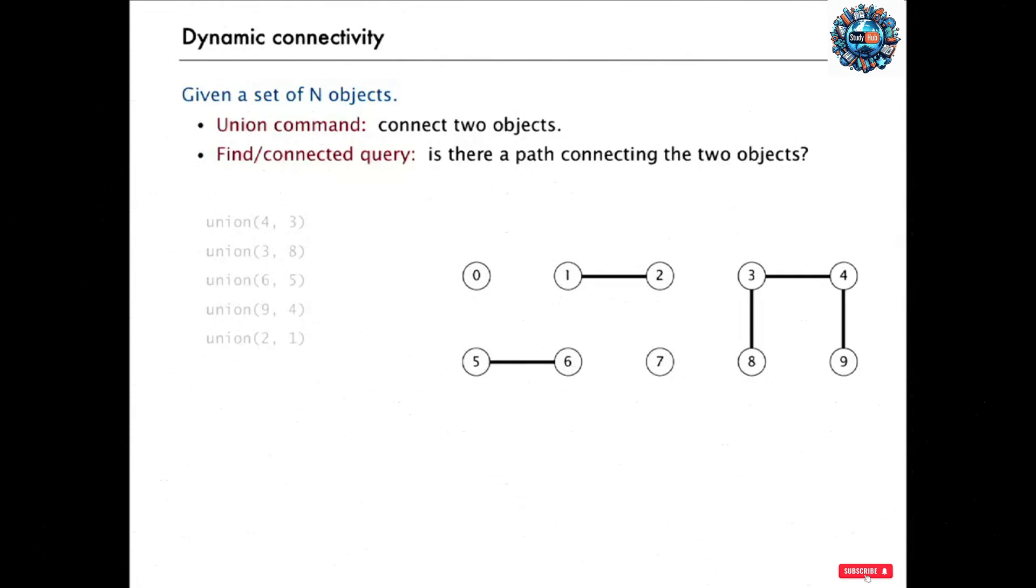So for example, in this set of 10 objects, we've performed already a bunch of Union commands, connecting four and three and three and eight and six and five, nine and four and two and one. And now we might have a connected query that says, is zero connected to seven? Well, in this case, there's no connection, so we say no. But if we ask, is eight connected to nine, we're going to say yes. Even though we don't have a direct connection between eight and nine, there's a path from eight to three to four to nine. So that's our problem, to be able to efficiently support these two commands for a given set of objects.